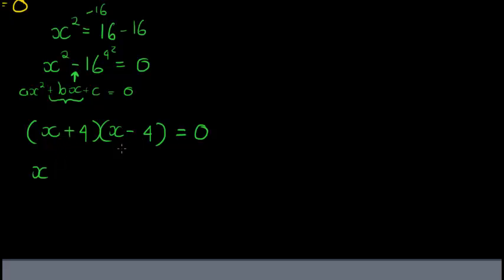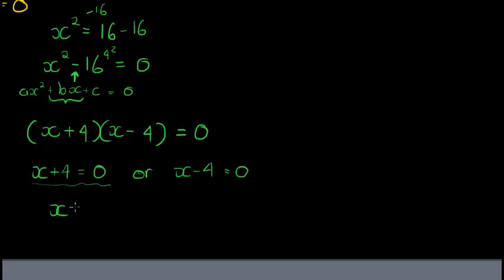Now we know two brackets are multiplying each other to get zero. Either the x plus four bracket is zero, giving x equals negative four, or the x minus four bracket is equal to zero, giving x equals positive four. There are our two answers — and you'll remember it was easy to find those two answers earlier by asking what can I square to get 16.